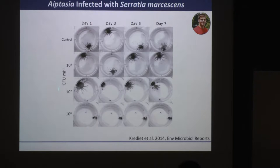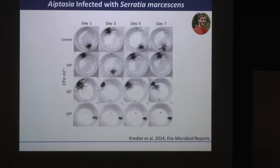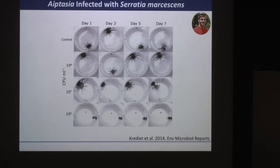What Nick did was take individual Aptasia — we can grow them in plastic Tupperware on the tabletop and change water maybe once or twice a week, which you can't do with coral. These guys are kept in six-well dishes under control conditions where we can see the tentacles are out and normal, not losing symbiodinium, not producing extra melanin. Then we infect at different concentrations of our pathogen up to 10^8 CFU/mL.